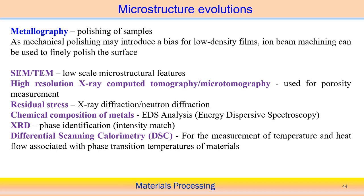Sometimes we can use high-resolution X-ray computed tomography — CT scan — to measure porosity in a structure. If we want to measure residual stress, X-ray diffraction can be utilized for measurements at the surface. If we want to understand residual stress at a certain depth from the surface, we can utilize neutron diffraction. These are techniques basically used to measure residual stress. Sometimes we also do EDS — energy dispersive spectroscopy — to understand the chemical composition of particular metals.